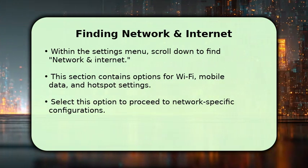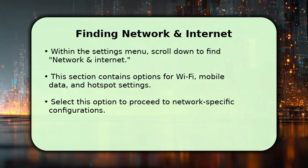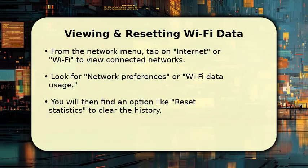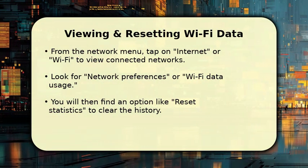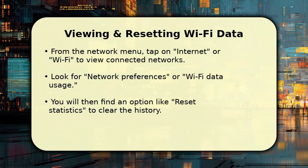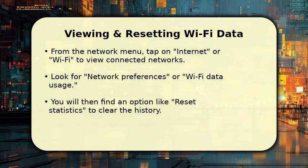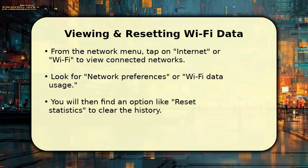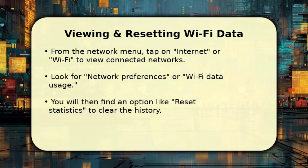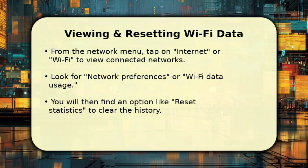Now, within the Network and Internet settings, tap on Internet, or sometimes just Wi-Fi, to see your connected networks. Here, you will usually find an option called Network Preferences, or possibly Wi-Fi Data Usage.